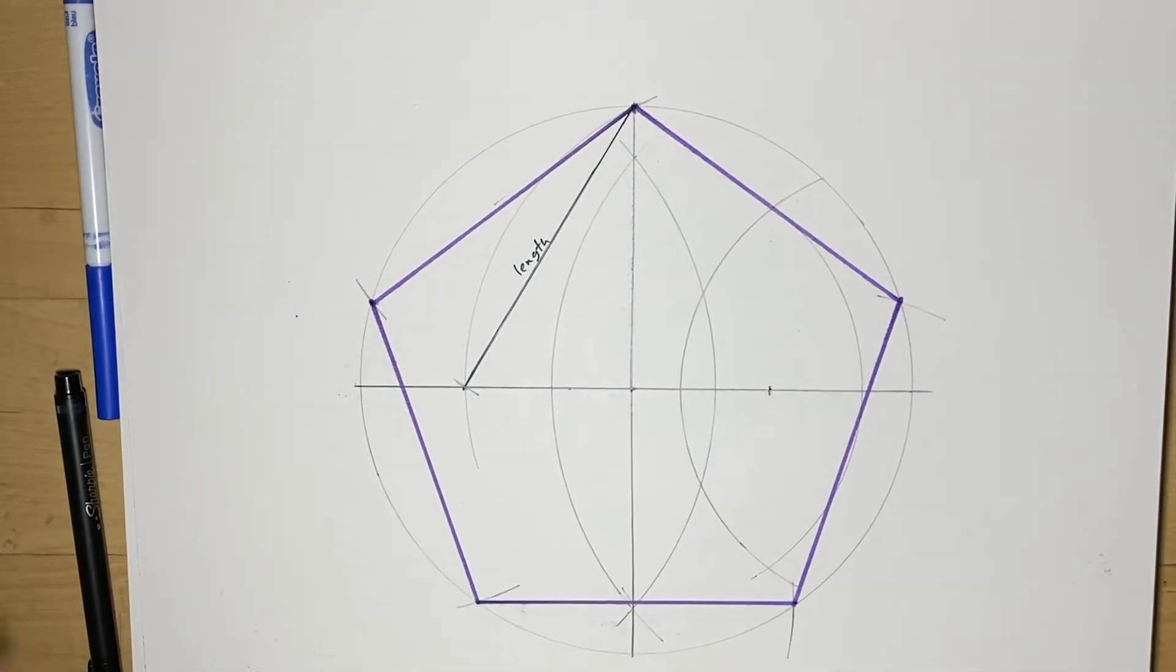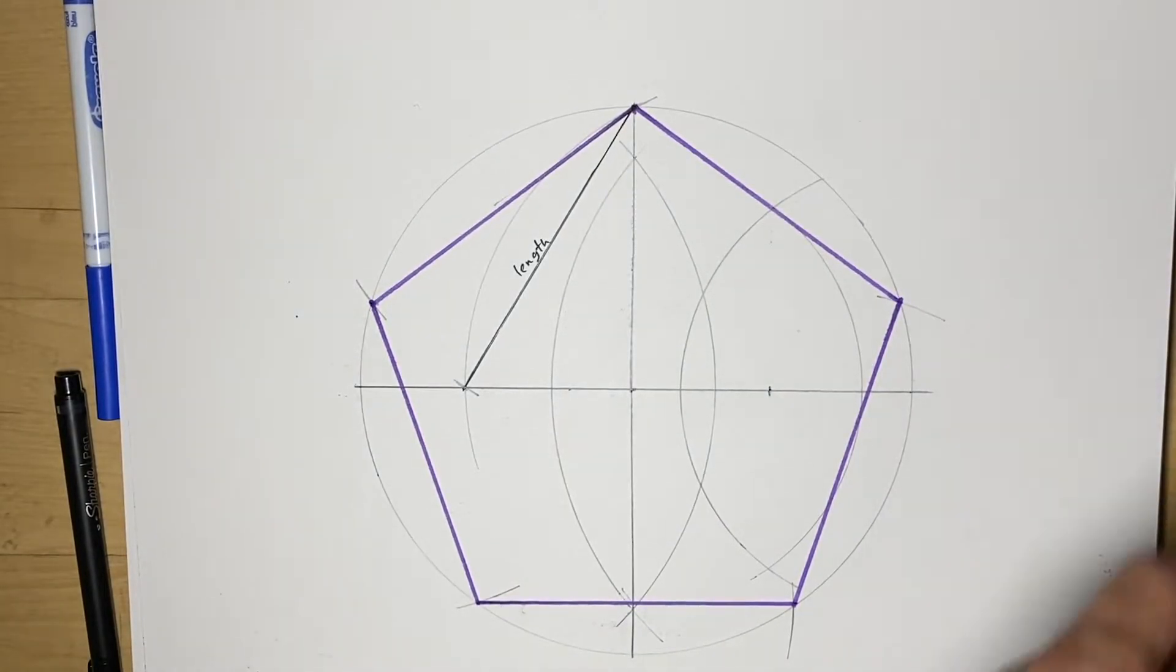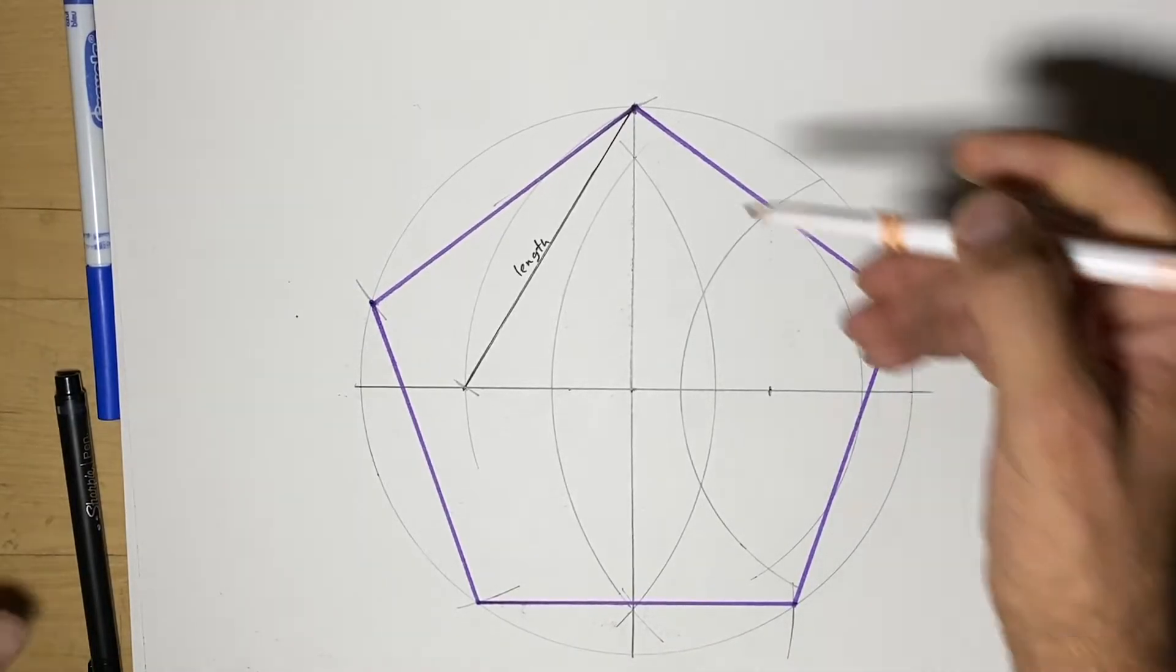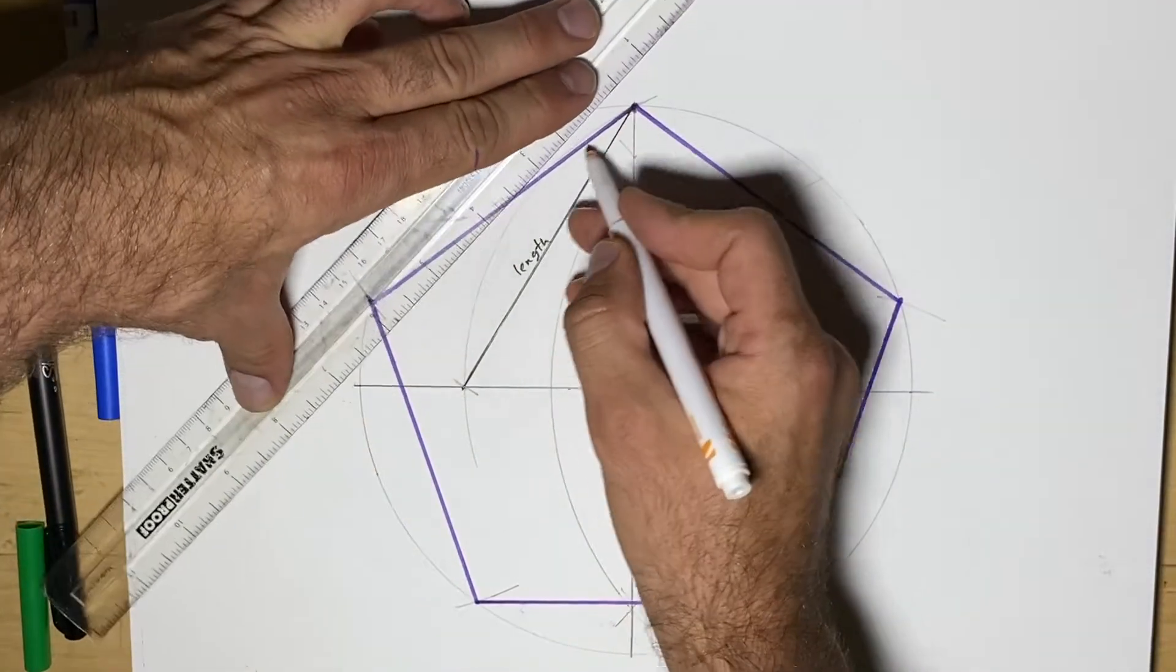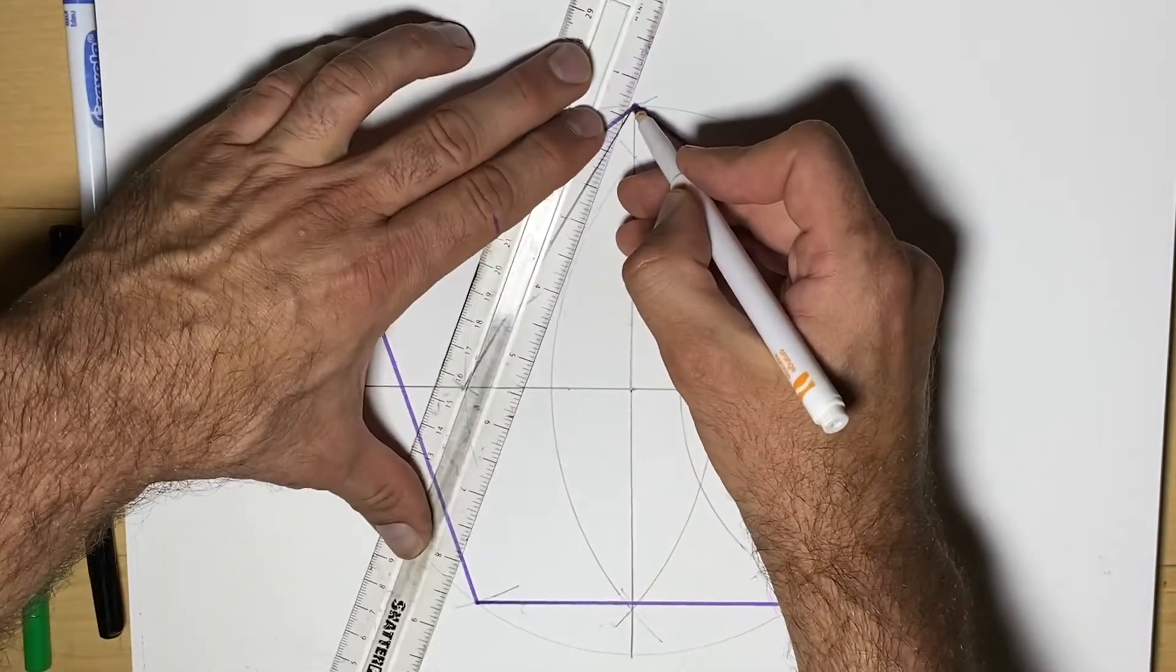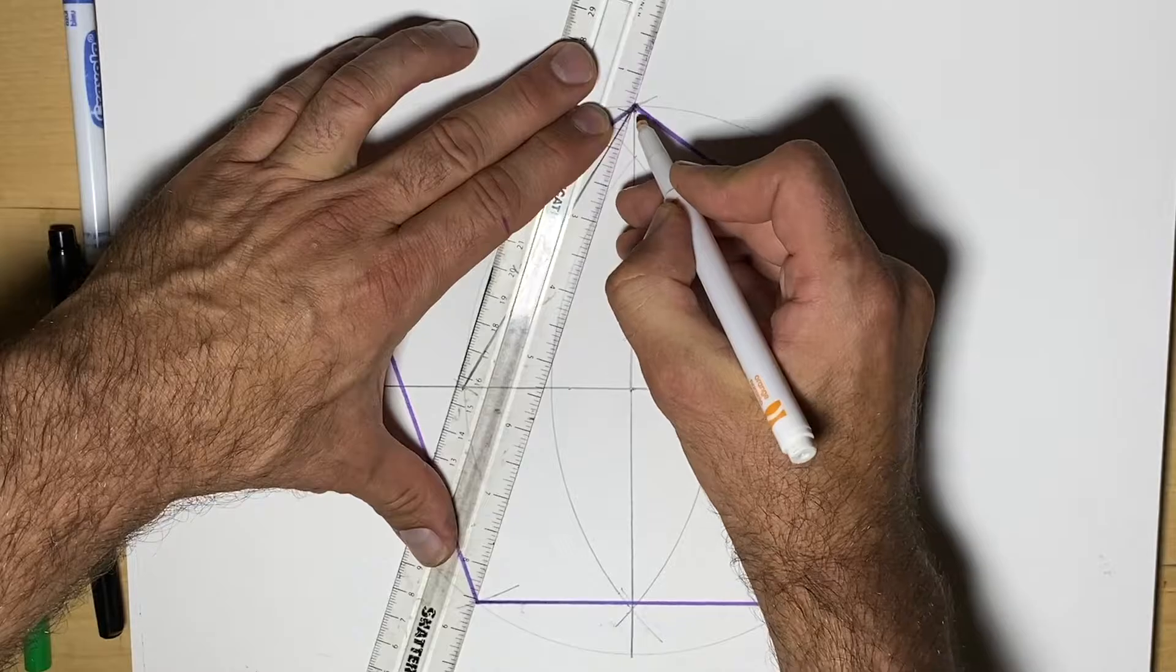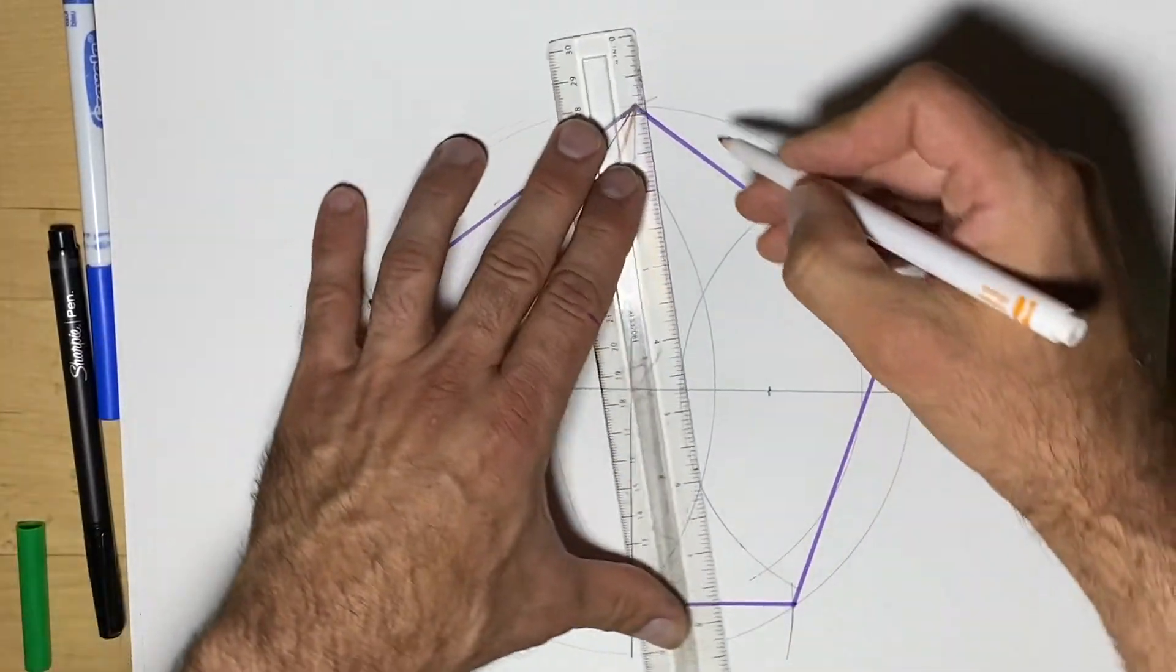This is going to be our pentagon. In order to turn it into a pentagram, we simply start with one vertex, one point, and we're going to connect each other one. Well, that one's already connected, so I'm going to go here to here and here to here.